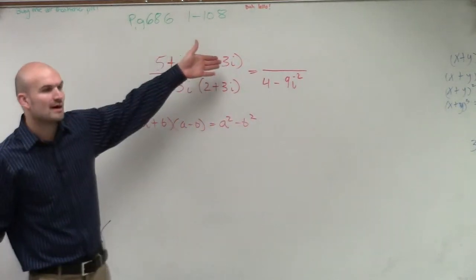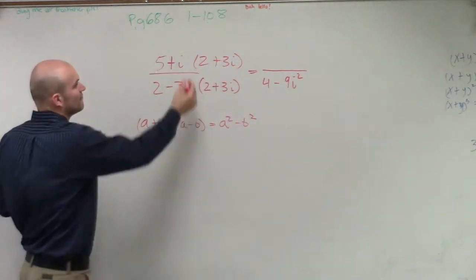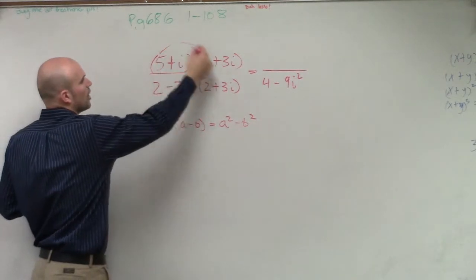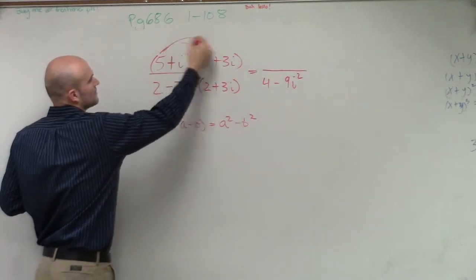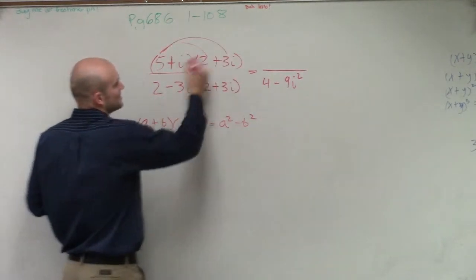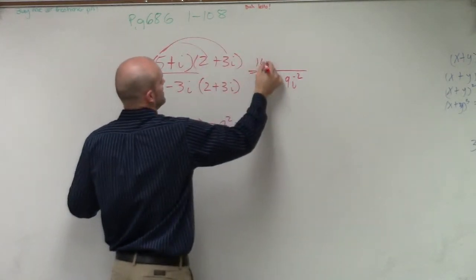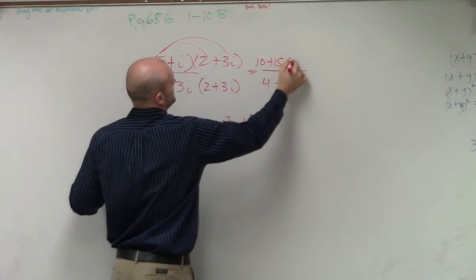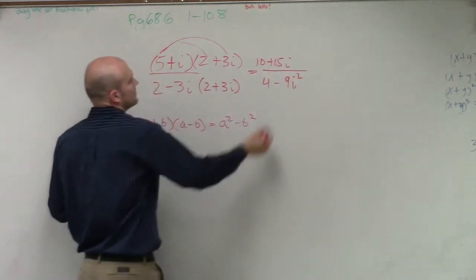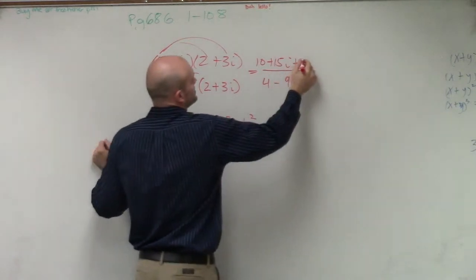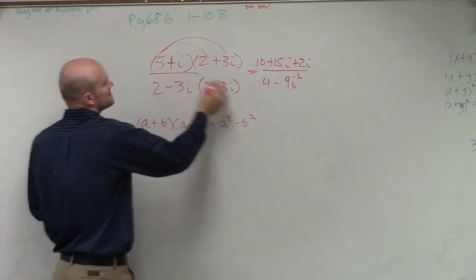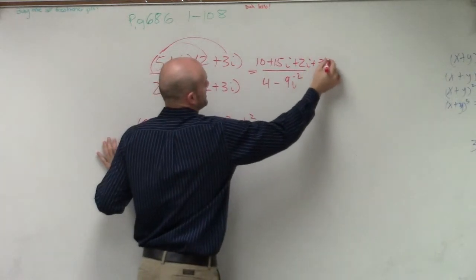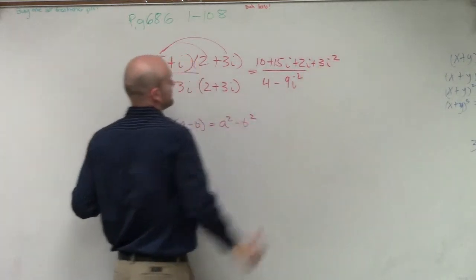Up top here I do need to apply FOIL. So I'll write this all out: I'll have 10 plus 15i plus 2i, and then this is going to become plus 3i squared.